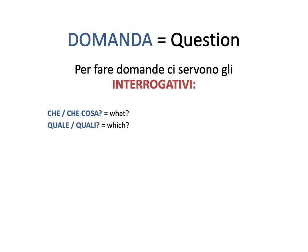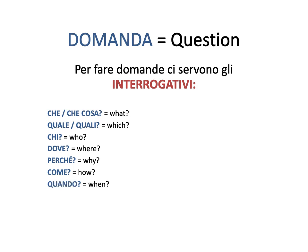Then we have quale or quali, which means 'which.' We have two versions of this because quale is singular when you're asking which about one thing or person, while quali is plural when you're asking about more than one. Then we have chi, which means 'who.' Dove, which means 'where.' Perché, which means 'why' — notice the accent at the end on the E. Come means 'how.' Quando means 'when.' Quanto means 'how much,' and quanti means 'how many.'